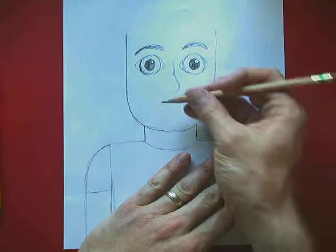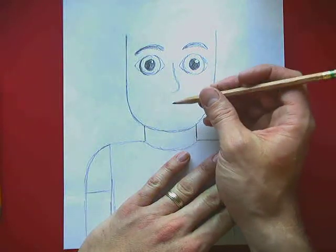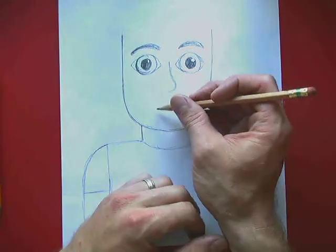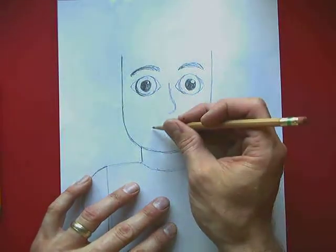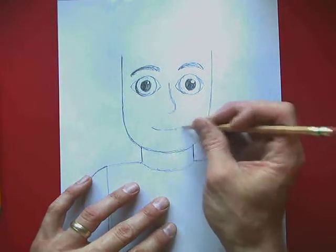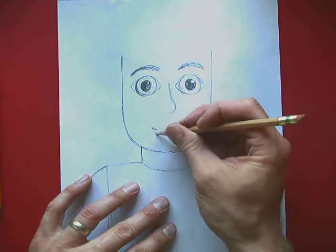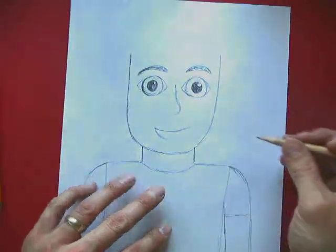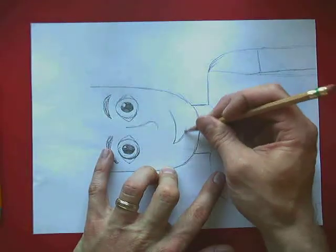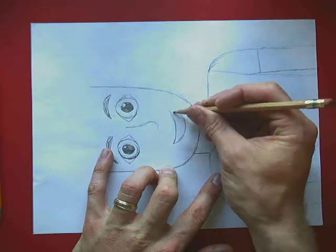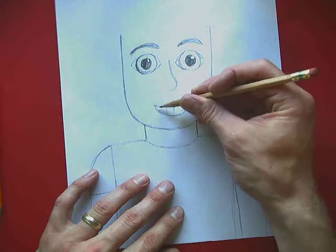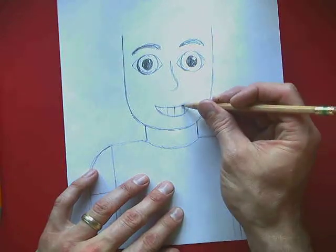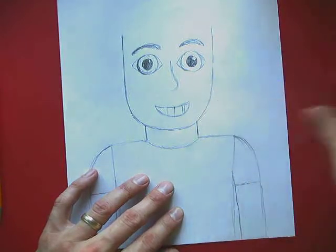For your mouth decide what kind of facial expression you want to have. Do you want to be happy? Do you want to show your teeth? Do you want to be silly and have your tongue sticking out? You decide and add that to your expression. So I want my teeth showing. So what I'm drawing is kind of like a crescent moon or a D turned sideways. And then I'm going to show my teeth.